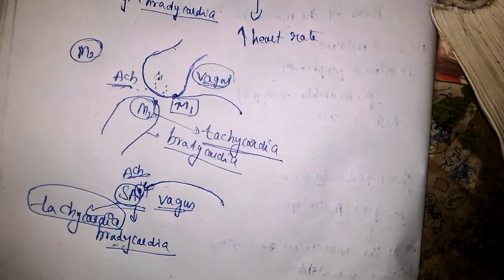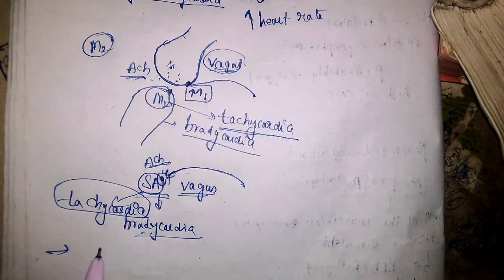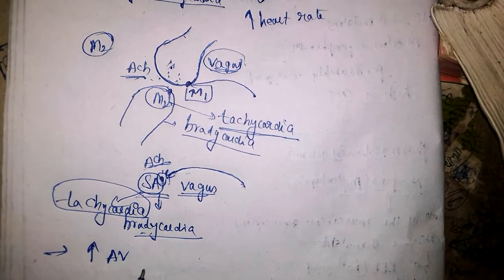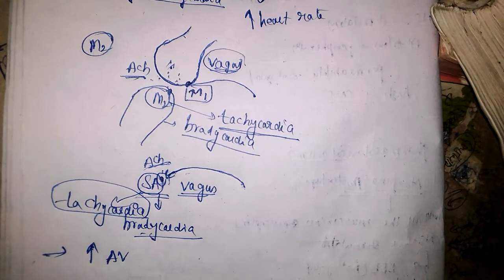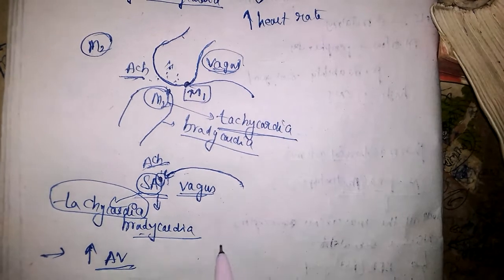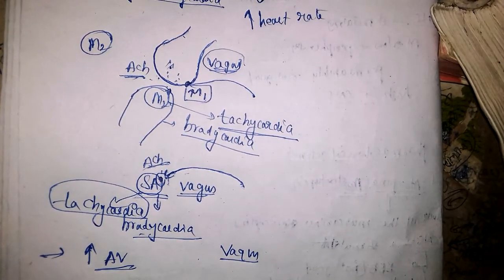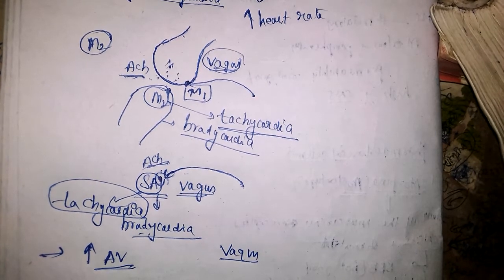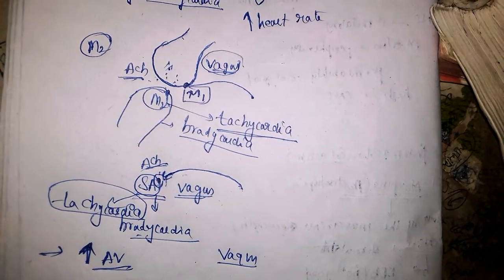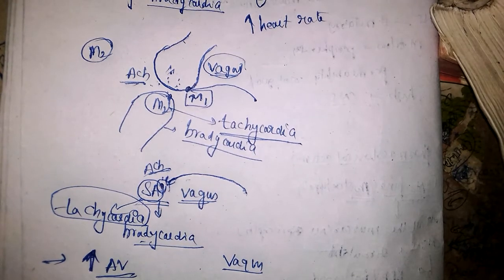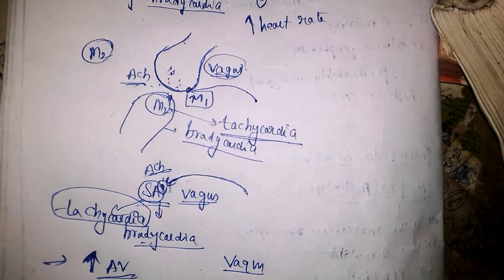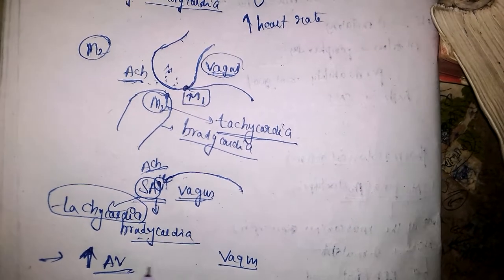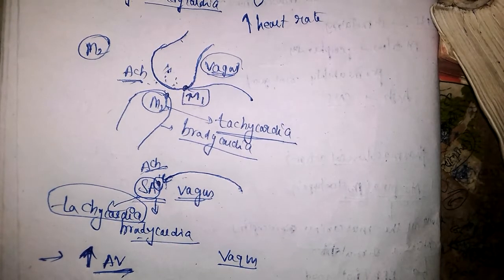Another action is increase in AV nodal conduction, especially if it has been depressed by vagal tone. If AV node conduction is decreased by the vagus nerve, that inhibition will be overcome by atropine. We can use atropine in partial AV block — especially when the conduction block is due to the vagus nerve.